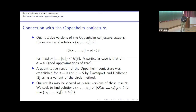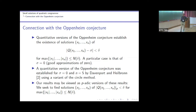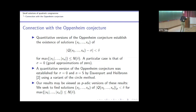We mix two norms: the p-adic norm and the usual norm. Trying to establish a p-adic analog of the quantitative Oppenheim conjecture leads precisely to our problem. This is interesting in that it complements Heath-Brown's setup.